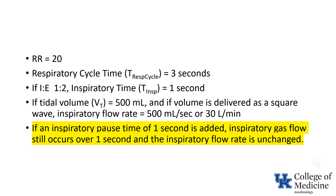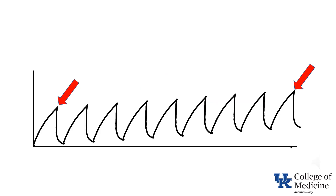The other way to add an inspiratory pause is to add time to inspiration. The advantage of this approach is that the inspiratory gas flow rate is not changed, so the peak inspiratory pressure should remain unchanged. The disadvantage is that the expiratory time is decreased, which may present a problem for patients with expiratory airflow obstruction. If the expiratory time is insufficient to permit full exhalation, each breath results in more air being retained in the lungs. Whether it's called breath stacking, auto-PEEP, or dynamic hyperinflation, the result is the same: functional residual capacity will increase and, over time, the peak inspiratory pressure will also increase.